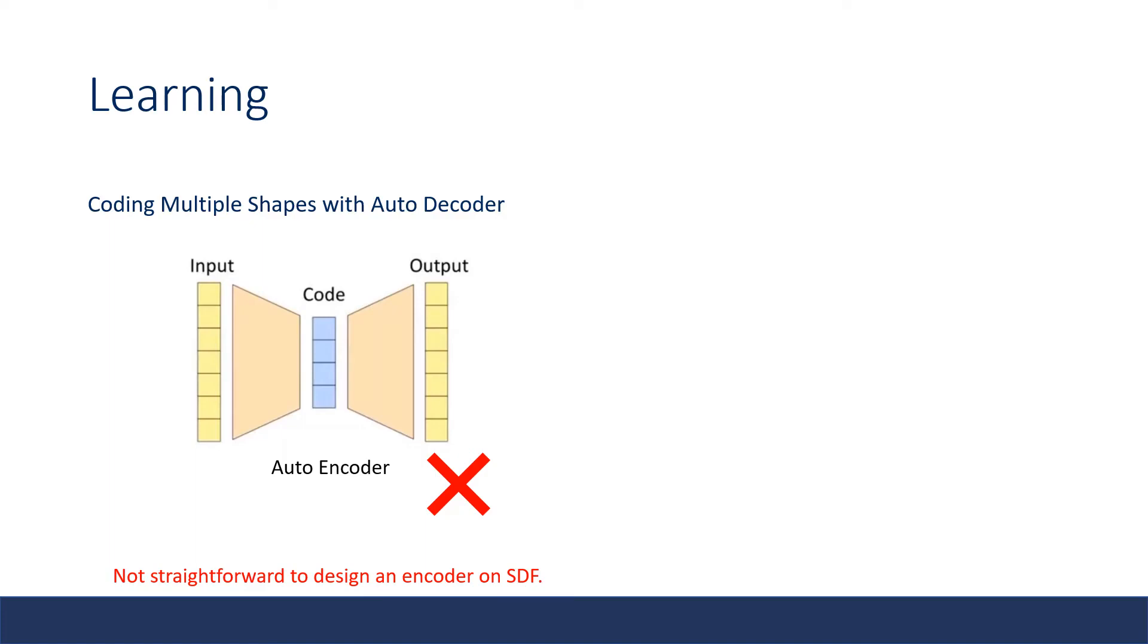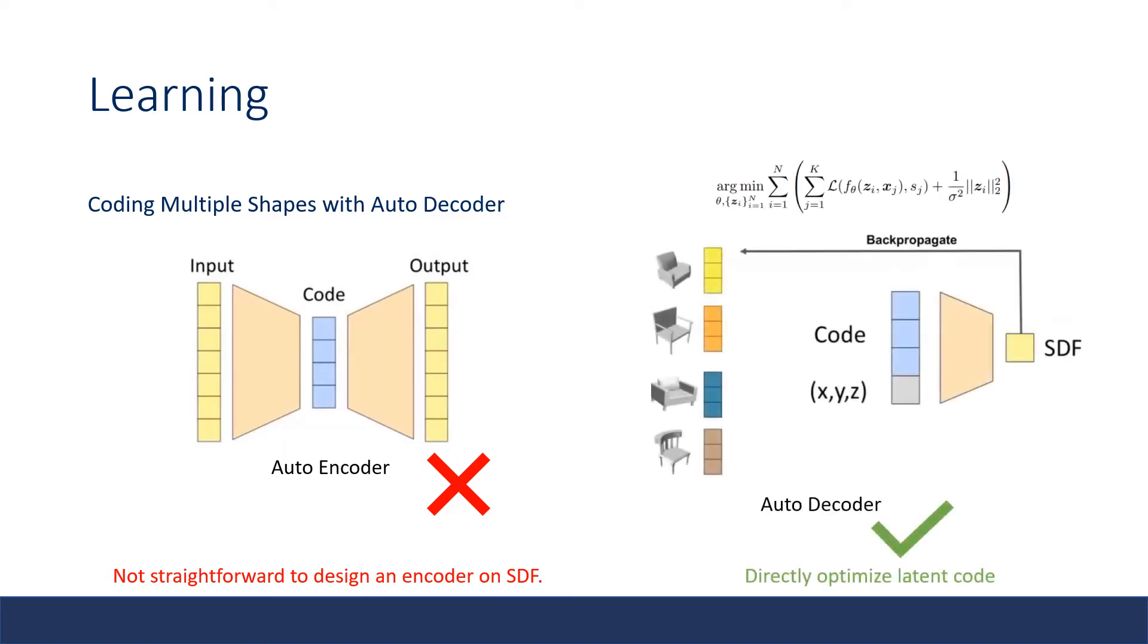This drives them to use a framework, as they called auto-decoder, for learning a shape embedding without the encoder. They first randomly initialize the code for each training shape, then the code is attached to a XYZ coordinate, and with the ground truth SDF, they can jointly optimize the shape code as well as the decoder weights to minimize the prediction error with simple backpropagation.